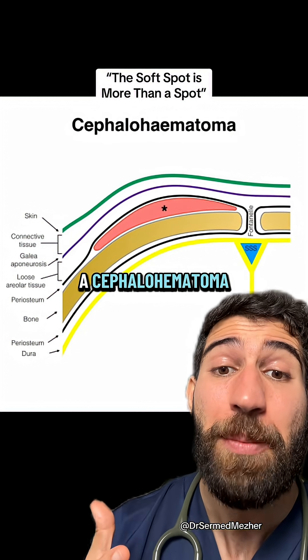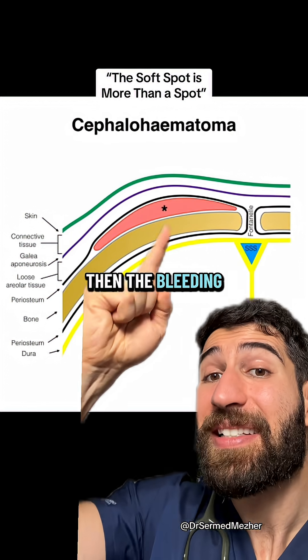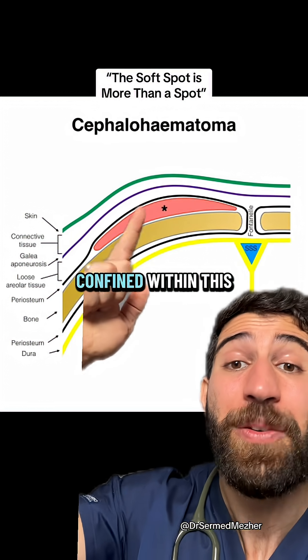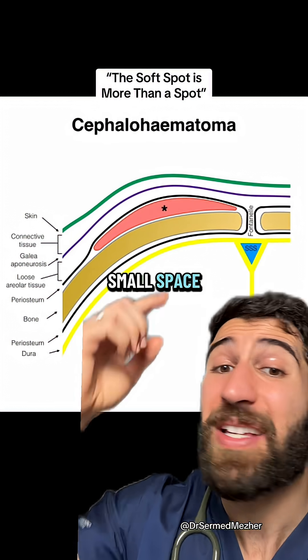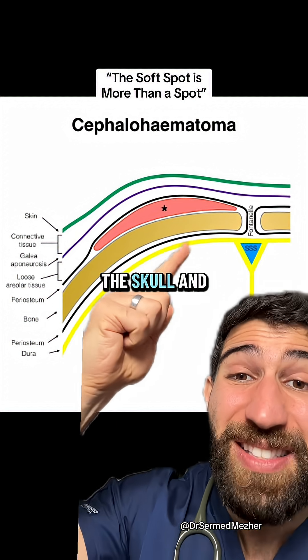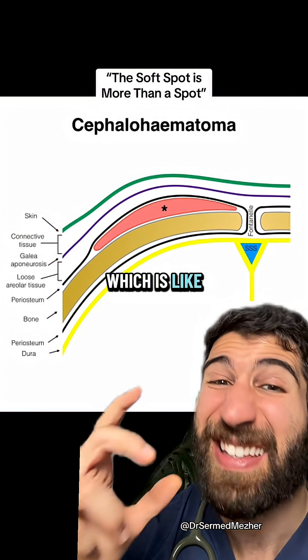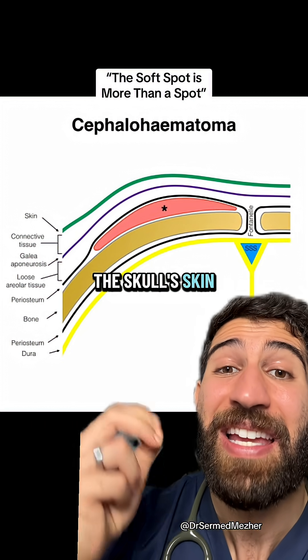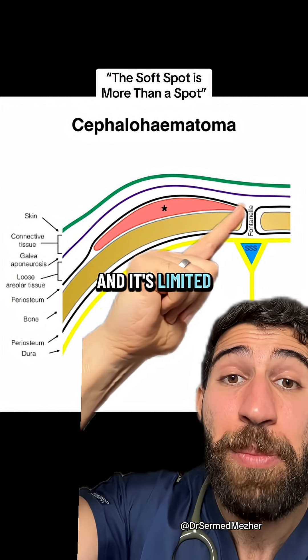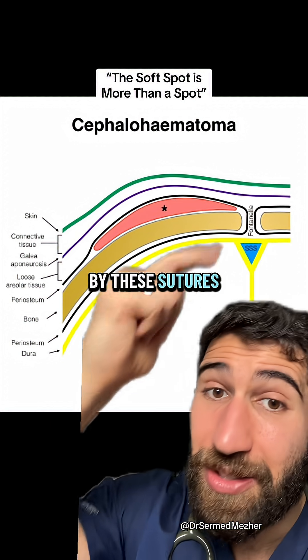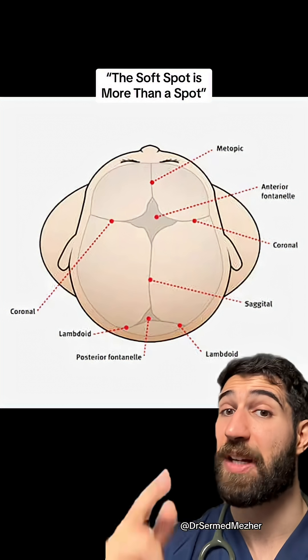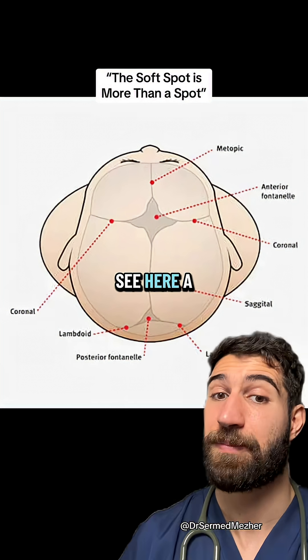But if it's a cephalohematoma, then the bleeding tends to be confined within a small space which is between the skull and the periosteum — which is like the skull's skin — and it's limited by the suture lines, as you can see here.